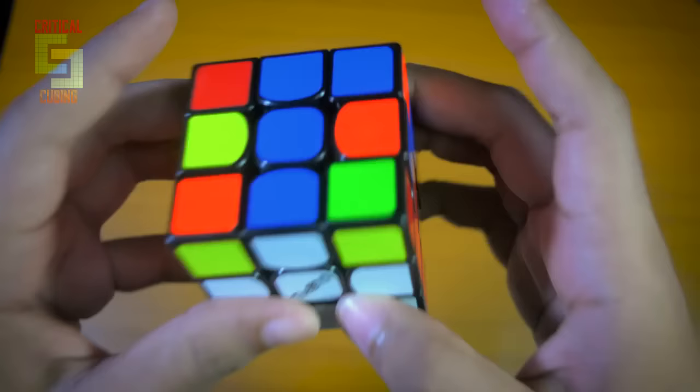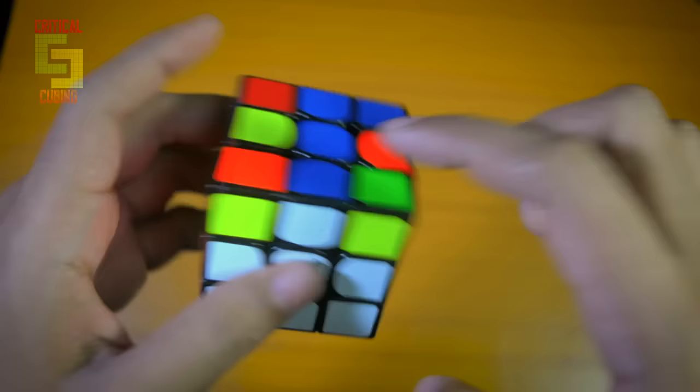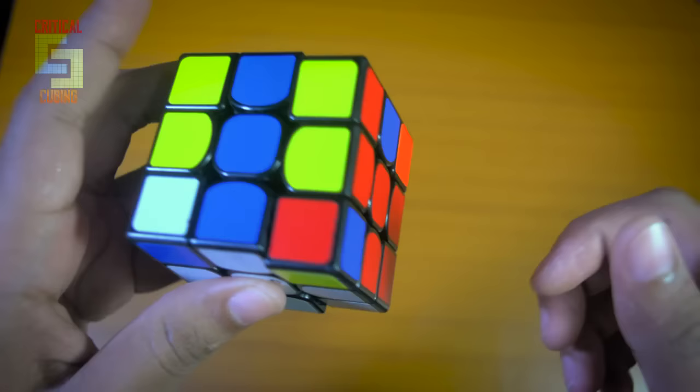The last pair that you have are these two. For solving this pair, you need to do another rotation. Then for solving this pair, you match the red with the red by doing a U2, and then you can pair these two up like this.